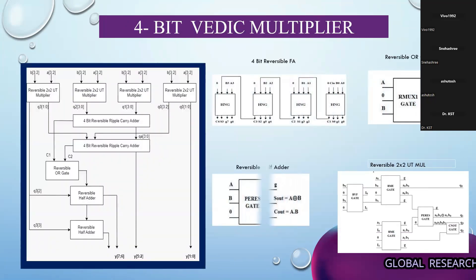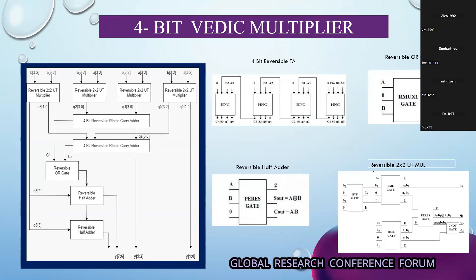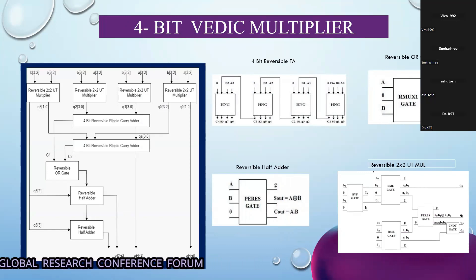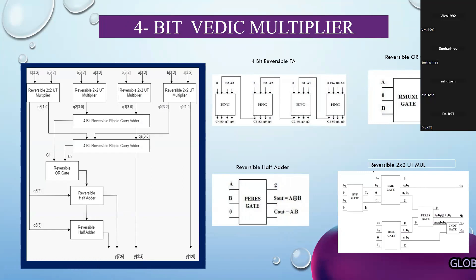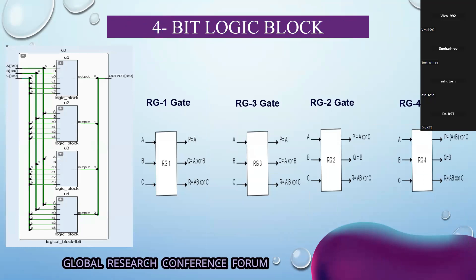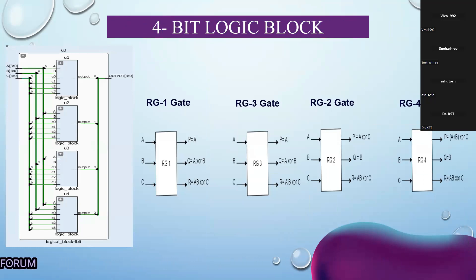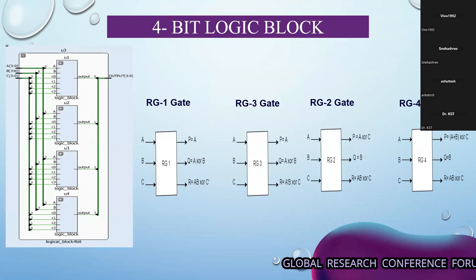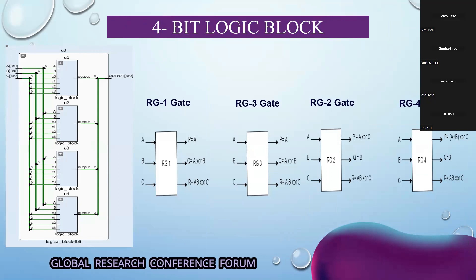The next block is a Vedic multiplier block. For designing it, we made use of the HNG, Paris, RMUX, BVF, BME, and CNOT reversible gates. The next block is the logical block, which performs logical operations, and is designed using 3-input, 3-output reversible gates — the RG1, RG2, and RG3. Various logical operations are performed in our ALU depending upon the combinations of the control inputs.